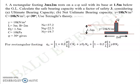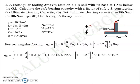Substituting those values, you get qu equal to 421.6 plus 607.5 plus 307.32, or qu equals 1336.42 kPa. That is the gross ultimate bearing capacity. To get the net ultimate bearing capacity, QNU equals QU minus γ·Df.